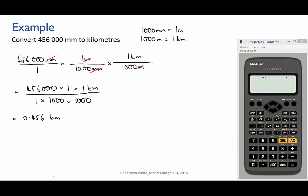What we want it to do is to divide 456,000 by brackets 1,000 times 1,000. So that's what we need to put in. We use brackets to encapsulate the bottom of the fraction. Always make sure you do this.